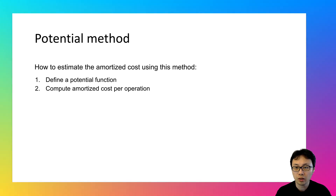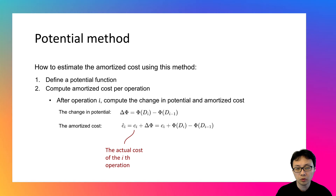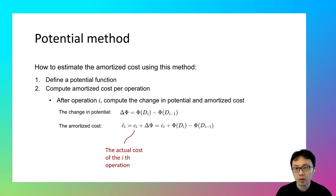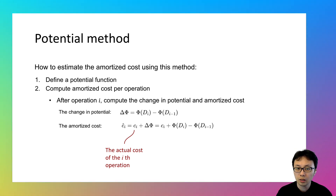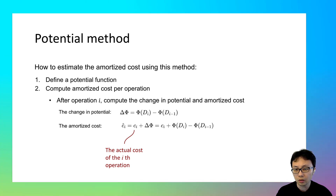The second step is to compute the amortized cost per operation. Using the potential method, this is something you can do per individual operation. After operation i, we look at two things: the actual cost of that operation — how much work it really did — and the change in potential, or how much the stored energy increased or decreased between the previous and current operations. The amortized cost is simply the sum of these two: the actual cost of operation i, plus the change in potential from operation i-1 to operation i.